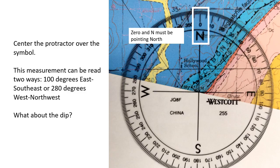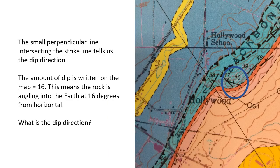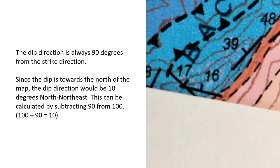What about the dip? The dip direction is also shown on the symbol. The small perpendicular line intersecting the strike line tells us the dip direction. In this case, towards the north. The amount of dip is written on the map: 16. This means the rock is angling into the earth at 16 degrees from horizontal. The dip direction is always exactly 90 degrees from the strike direction. Since the strike is 100 degrees east-southeast and the dip is towards the north, we would subtract 90 degrees from 100. This would give us 10 degrees. The dip direction is north 10 degrees.